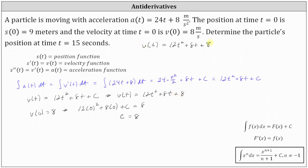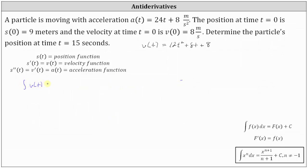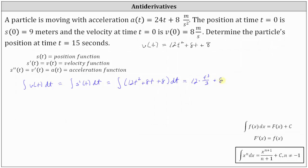Let's go ahead and record this above. Now, if we find the antiderivative of the velocity function, we can recover the position function because the velocity function is equal to the derivative of the position function. Evaluating the antiderivative integral of the velocity function equals the antiderivative integral of (12t² + 8t + 8) dt. The antiderivative is 12 times t³ divided by 3, plus 8 times t² divided by 2, plus 8t plus C.